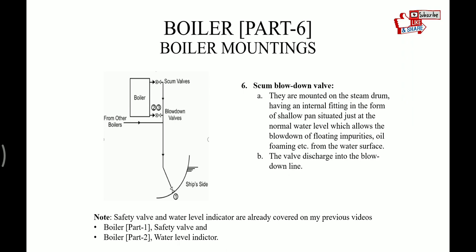Scum blow down valve. They are mounted on the steam drum having an internal fitting in the form of shallow pan situated just at the normal water level which allows the blow down of floating impurities, oil, forming, etc., from the water surface. The valves discharge into the blow line. These valves are two in number and mounted in series.